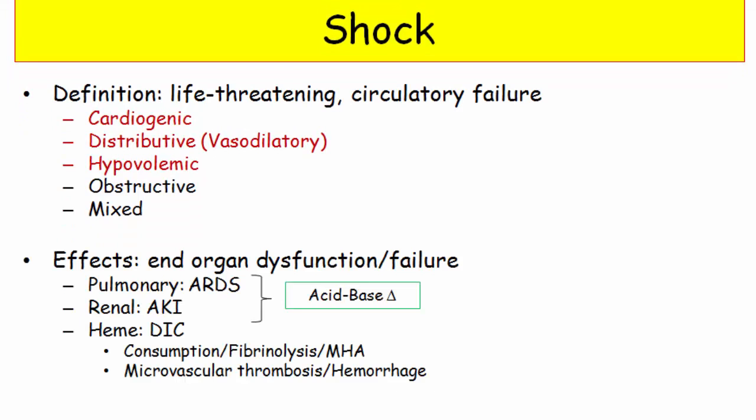In terms of shock derivatives, the USMLE will typically present a shock scenario and use it to introduce questions about end organ failure. These end organs include the lungs with appropriate ARDS derivatives. They will present renal manifestations of hypoperfusion with corresponding questions on acute tubular necrosis, or more rarely diffuse cortical necrosis, and the combination of pulmonary-renal disease and the acid-base disturbances which accompany shock. Almost all DIC questions will be presented in the context of shock, where derivatives on the laboratory parameters will be assessed.